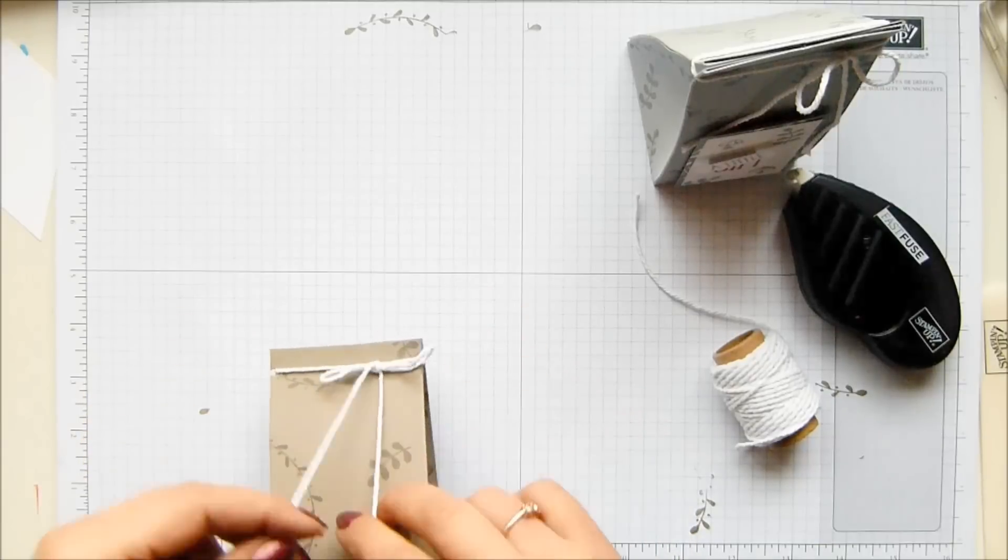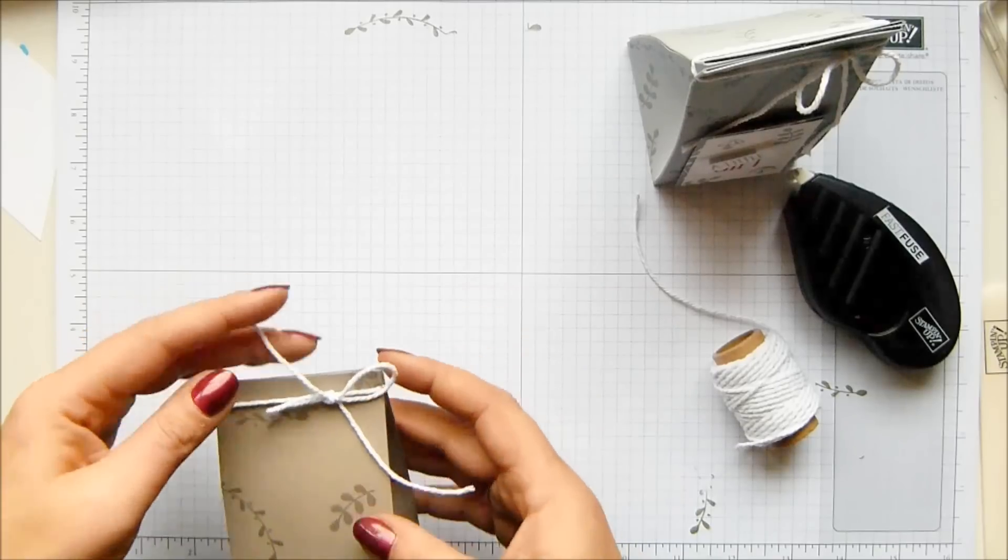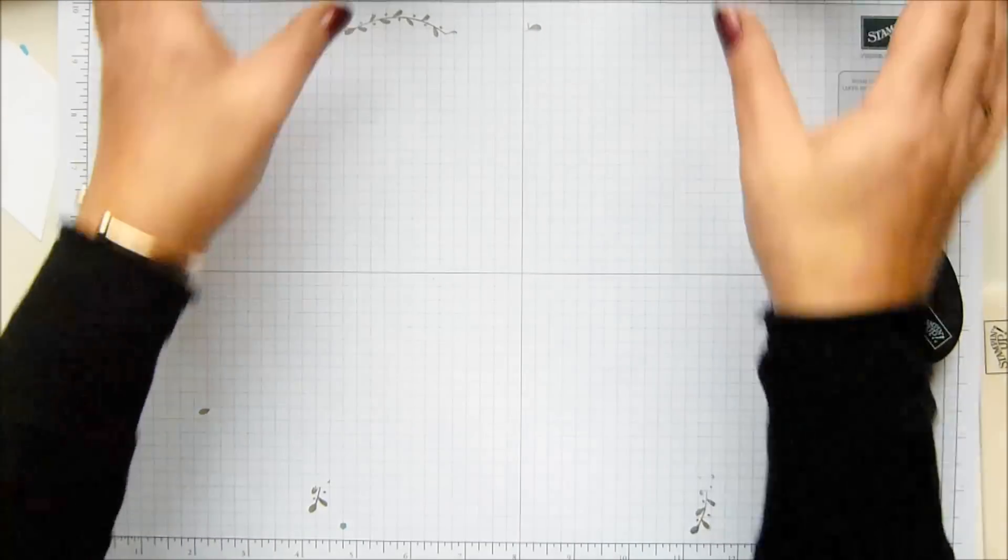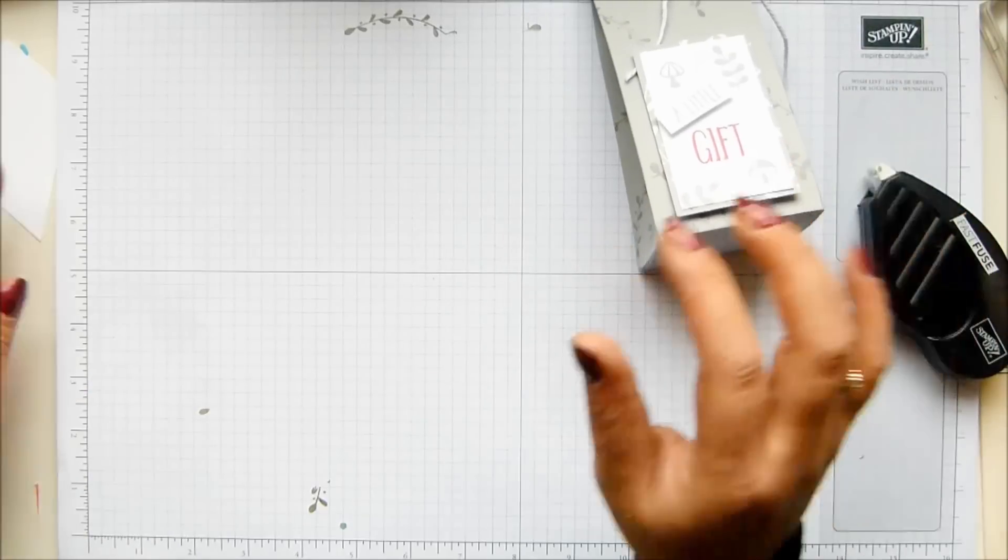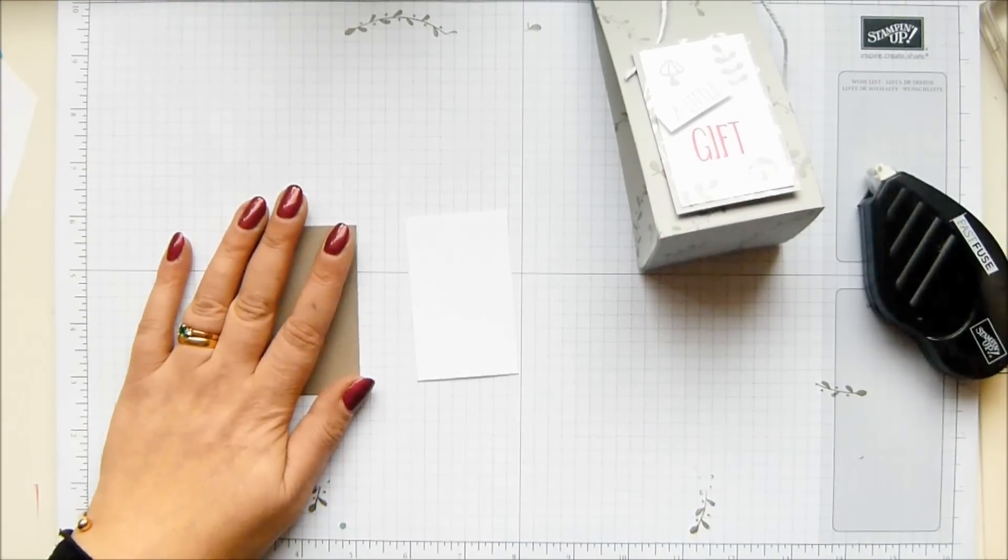There we go. Box closed. And it will just slip off on and off quite easily as well. How cute. Love it. Let me put those off to one side because I actually want to stamp my bits on the front. I've got two pieces of cardstock here.